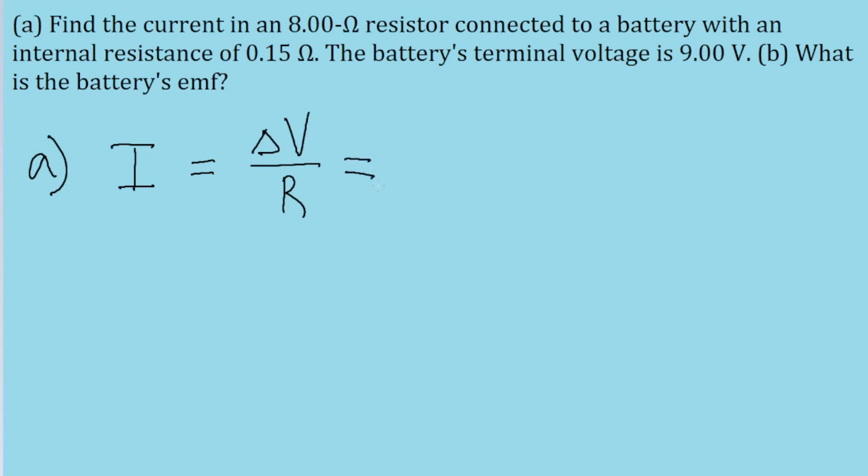The only relevant resistance is the resistance of the resistor itself. So the battery's terminal voltage is 9 volts, so we take that and divide it by the 8.00 Ohms of the resistor. Put that into our calculator and we find a current of 1.13 amperes. That's the answer to part A.